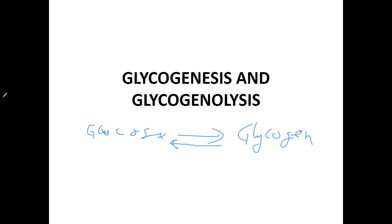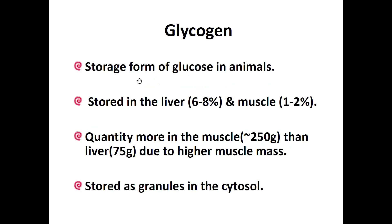Glycogen is a storage form of glucose in animals. When we take carbohydrate diets, which are of course highly rich in glucose, some carbohydrates after digestion will be sent to tissues ready to generate energy. If there is any extra glucose not needed for maintenance of blood glucose level or energy generation, it will be transported to the liver or muscle cells where it will be converted into glycogen.